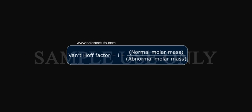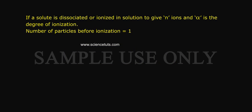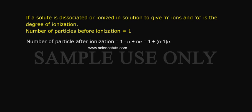Van't Hoff Factor I is equal to normal molar mass by abnormal molar mass. If a solute is dissociated or ionized in solution to give N ions, N alpha is the degree of ionization. Number of particles before ionization is equal to 1. Number of particles after ionization is equal to 1 minus alpha plus N alpha equal to 1 plus N minus 1 into alpha.